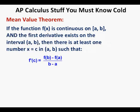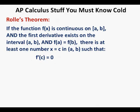Mean Value Theorem: if the function f(x) is continuous on the closed interval [a, b] and the first derivative exists on the interval (a, b), then there is at least one number x equals c in the open interval (a, b) such that f prime of c equals [f(b) minus f(a)] over (b minus a). Additionally — Rolle's Theorem — if the first derivative exists on (a, b) and f(a) equals f(b), there is at least one number x equals c in the open interval (a, b) such that f prime of c equals 0.